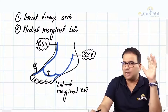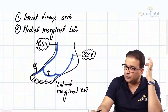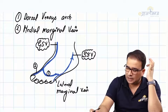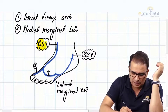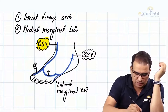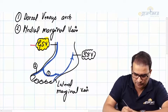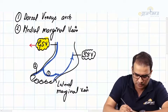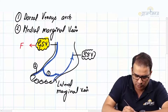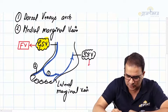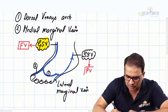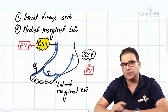That is the first thing about formation, and our main concern here is the great saphenous vein. The great saphenous vein is a tributary of - and drains into - the femoral vein, whereas the small saphenous vein is going to drain into the popliteal vein.